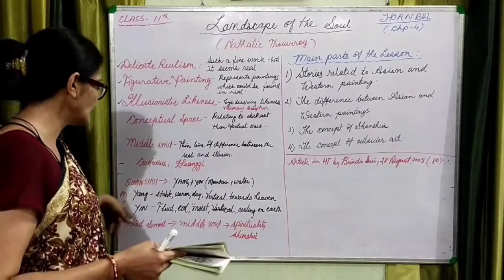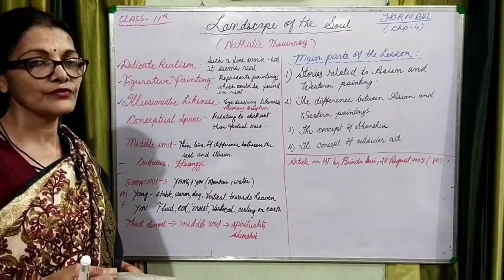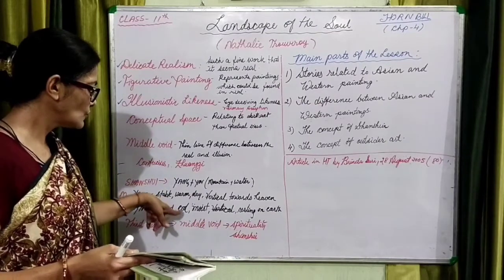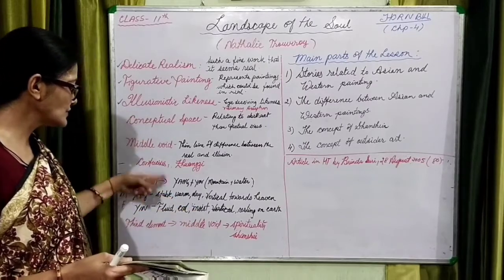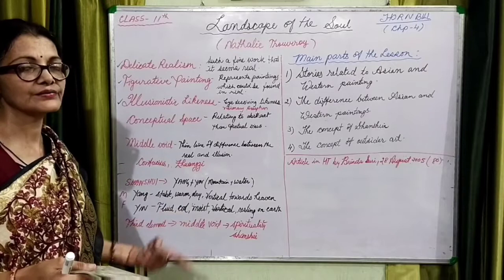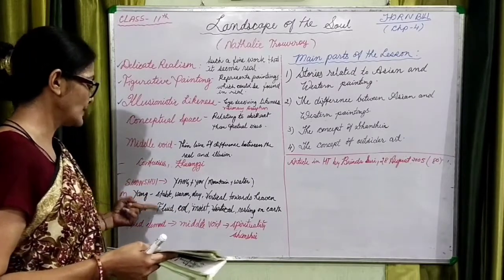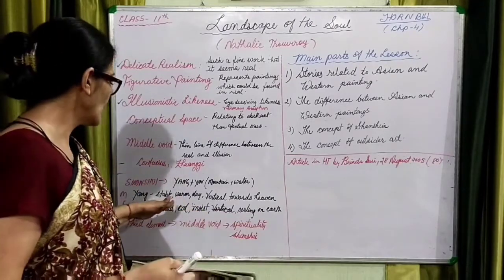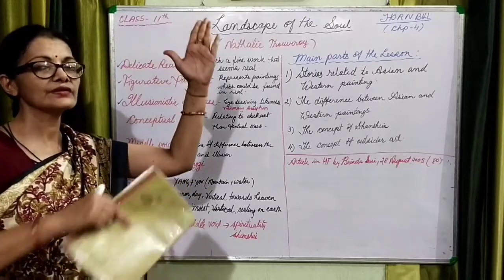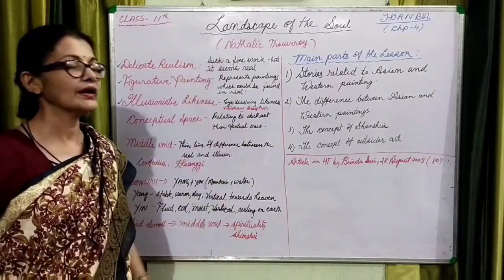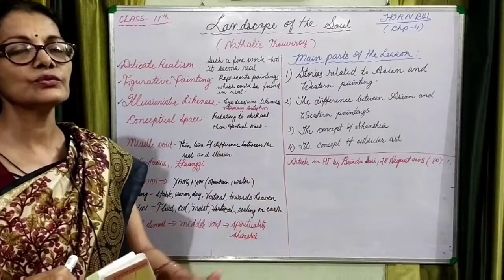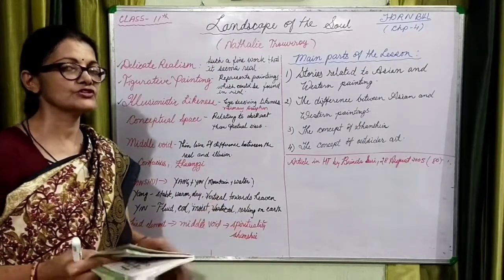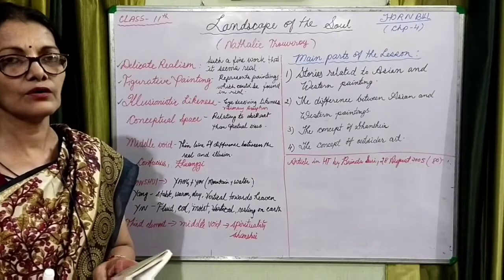Yin is the feminine aspect of the universe — it is fluid, cool, and moist. As you can see, this is totally in contrast to Yang, totally contrasted to the masculine aspect. Yin is horizontal, resting on the earth, while Yang goes towards the sky. These are the two complementary poles of the universe, totally opposite to each other, and that is the basis of the universe.